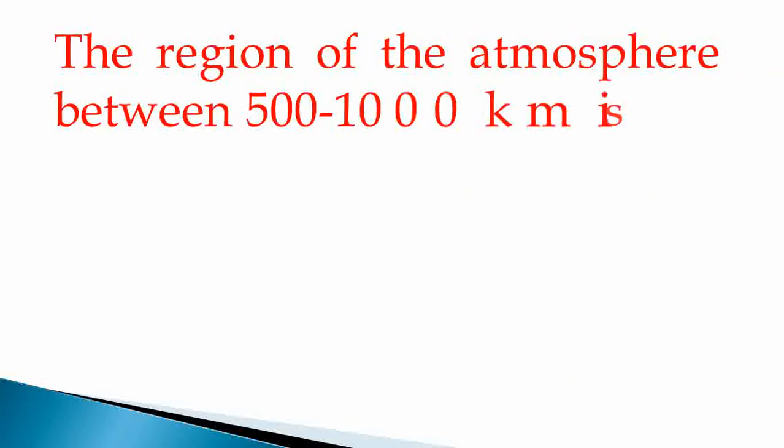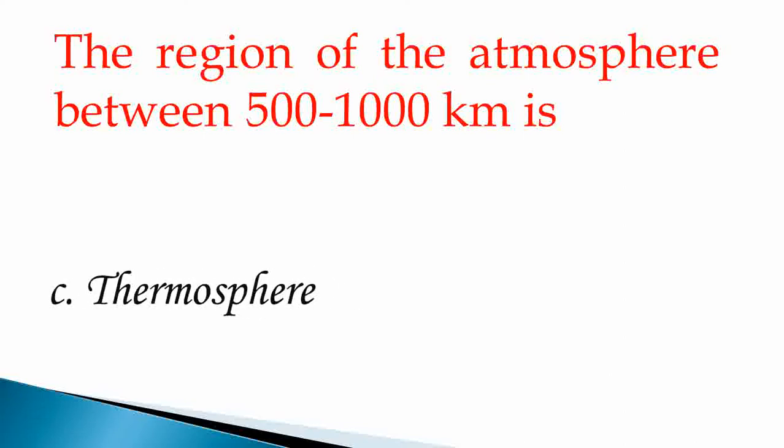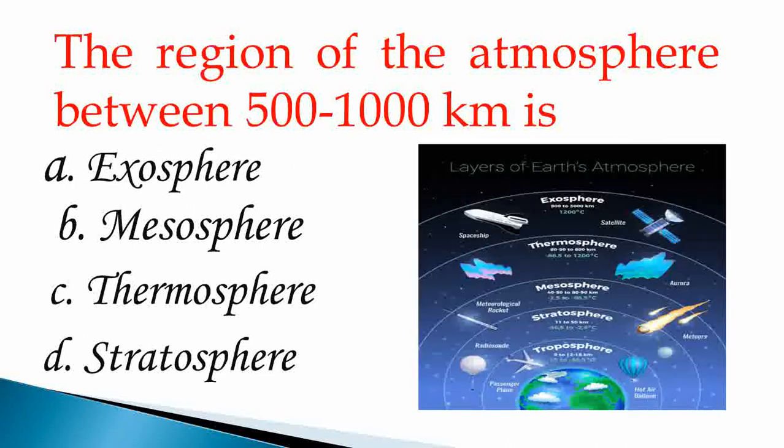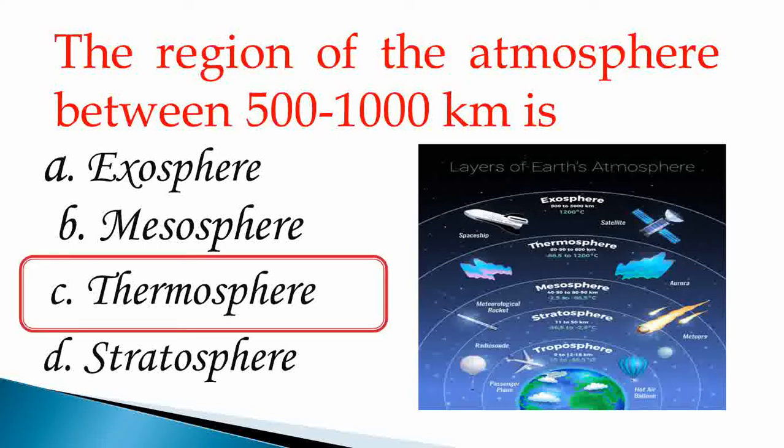Next question. The region of the atmosphere between 500 to 1000 km is A: Exosphere, B: Mesosphere, C: Thermosphere, D: Stratosphere. Our answer is C, Thermosphere.